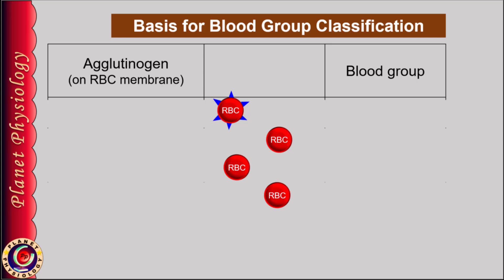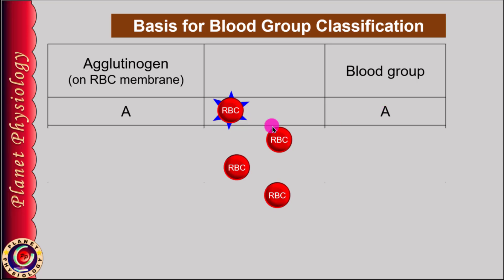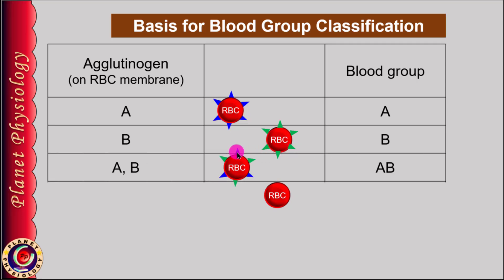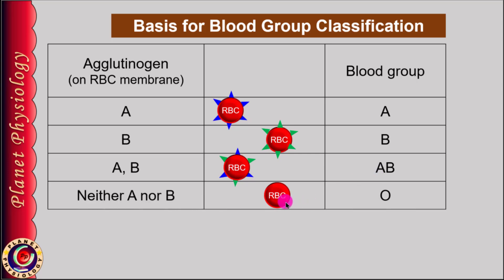If RBCs have agglutinogen A on their surface, blood group is A — the blue triangles on the RBCs represent agglutinogen A. If RBCs have agglutinogen B, blood group is B. If they have both A and B agglutinogens, blood group is AB. And if they have neither agglutinogen A nor B, blood group is O.